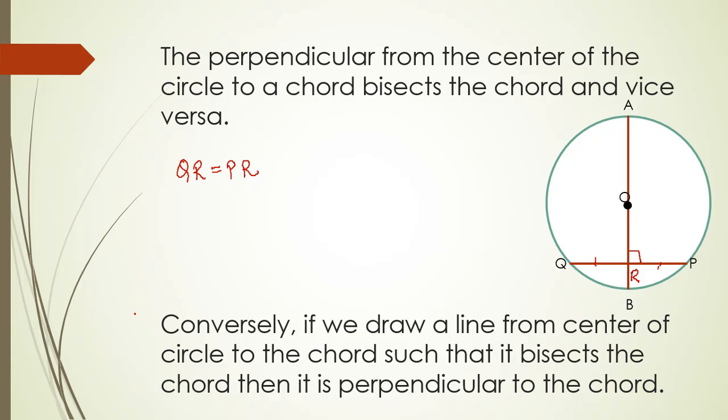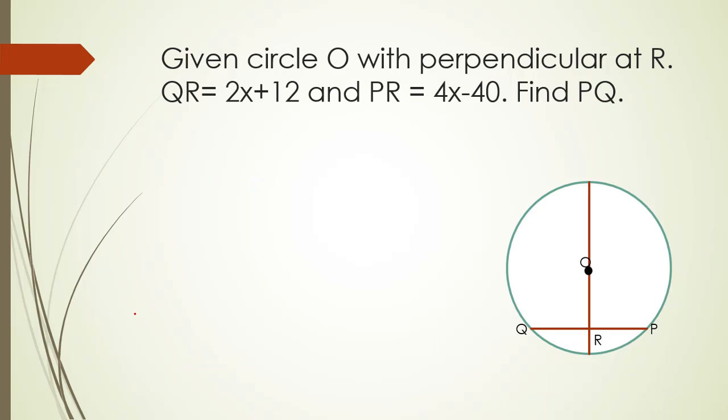Let's move on to solving one of the problems. Given circle O with perpendicular at R, QR is 2x plus 12, and PR is 4x minus 40. Find PQ. We are given that OR is perpendicular at R. From the theorem that we have just done, these two parts need to be equal. So I have QR equal to PR by theorem 2 of this video.